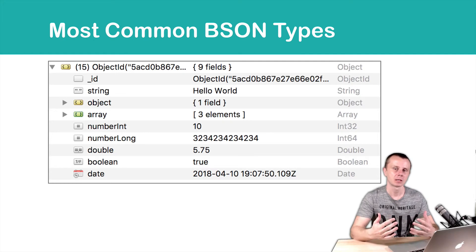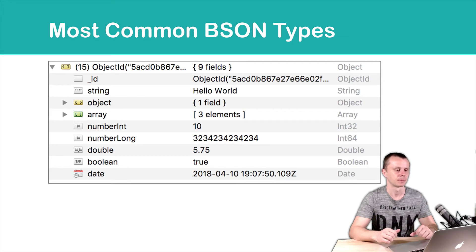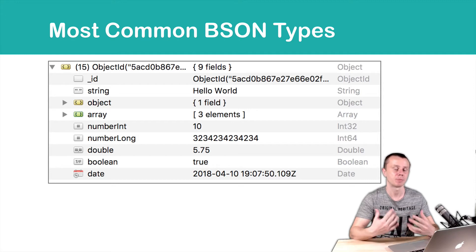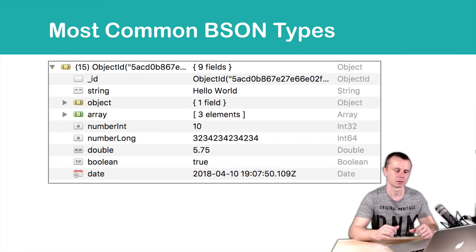Before, we discussed what BSON is, what JSON is, and what Extended JSON is. Remember that Mongo stores documents in its internal database using the special BSON format, which has many more variable types than standard JSON.